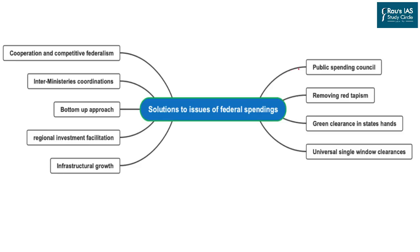Given these issues, what solutions do we have? The government should create a Public Spending Council to regulate the spending limits of both centre and state. Second, removing red tapism at a universal rate will attract private investment irrespective of the interest rate — even with high interest rates, given these incentives, the private sector would invest more in India. Green clearances for infrastructure projects should be given more to states rather than the centre to decentralize approvals. All states, irrespective of economic size and development level, should universalize single window clearances for attracting private investment.